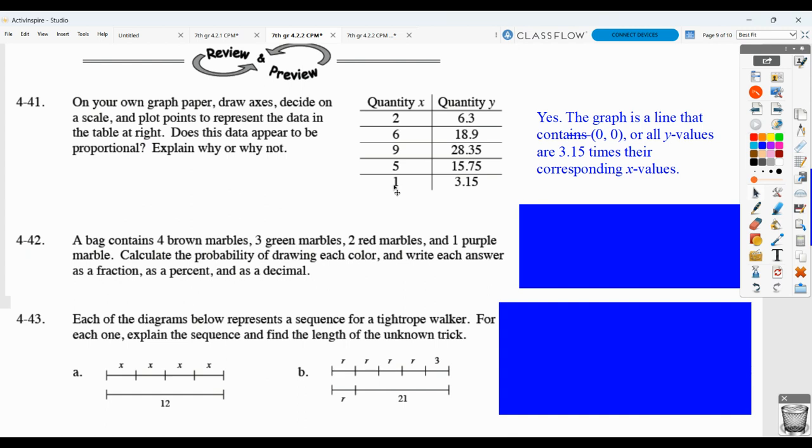So, basically, 1 at the horizontal should line up with 3 and 1500s at the vertical. 2 on the horizontal should line up with 6 and 3 tenths on the vertical. 3 will not have a point. 4 will not have a point. 5 on the horizontal would line up with 15 and 75 hundredths. 6 on the horizontal lining up with 18 and 9 tenths. 7 will not have a point. 8 will not. And 9 would line up with 28 and 35 hundredths.